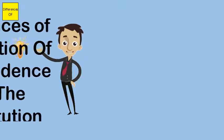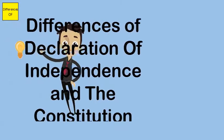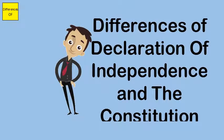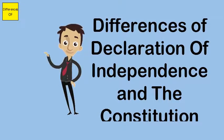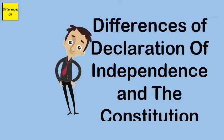Difference between the Declaration of Independence and the Constitution. The Declaration of Independence is only a statement that proclaims that the 13 colonies were independent states and no longer under British rule.